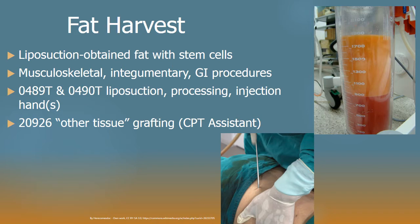We have a couple of new codes — 0489T and 0490T — that's liposuction, processing, and injection for this stem cell-containing fat. Sounds great so far, except in the code descriptor it's injection into the hands for scleroderma. It's a very narrow utilization of this new technique. Surgeons in tertiary referral centers use this fat for all kinds of other procedures besides the hands. Look for this procedure being done on the hands and know the new technology code is there, but don't be enticed to choose these new technology codes when liposuction-derived stem cells are used elsewhere in the body.